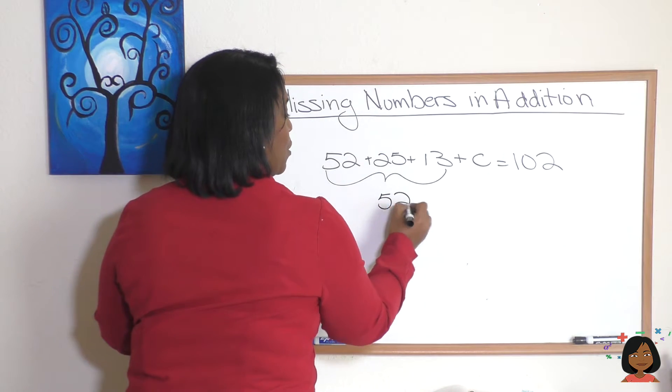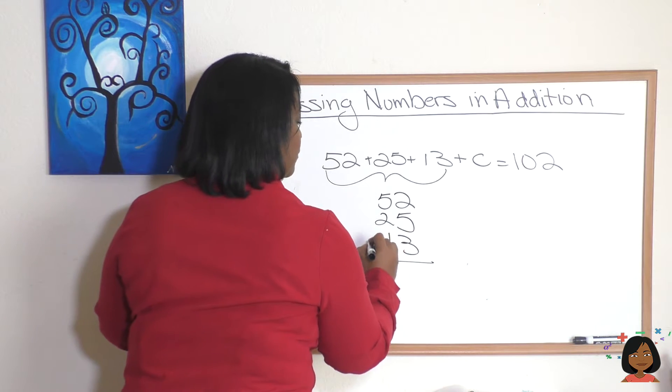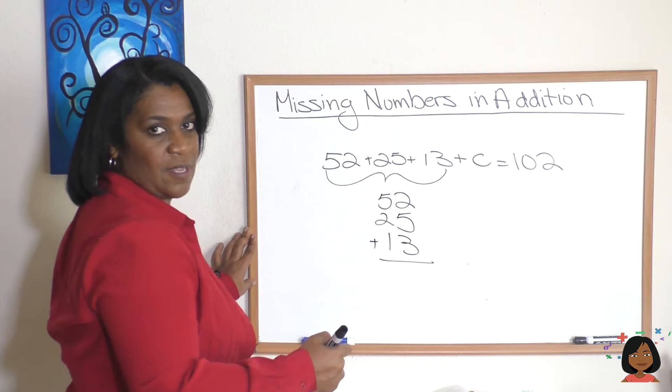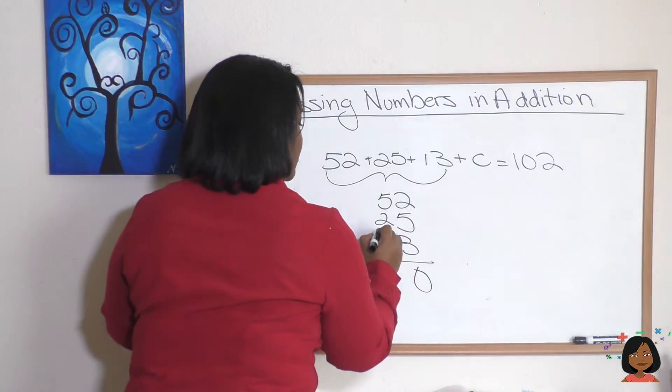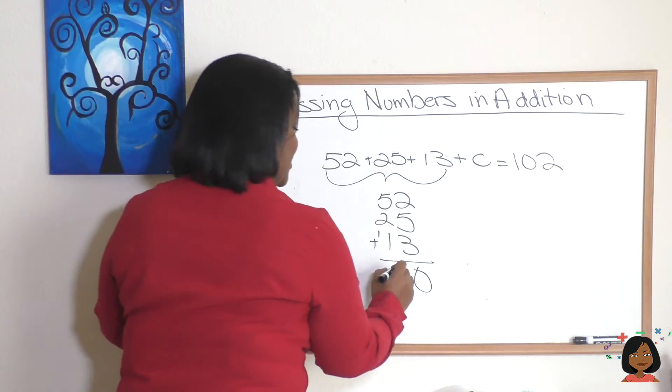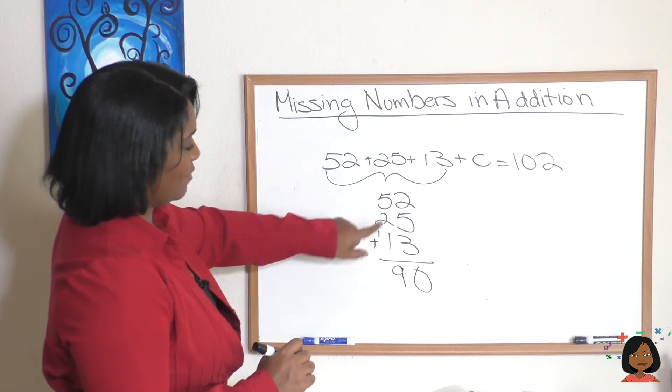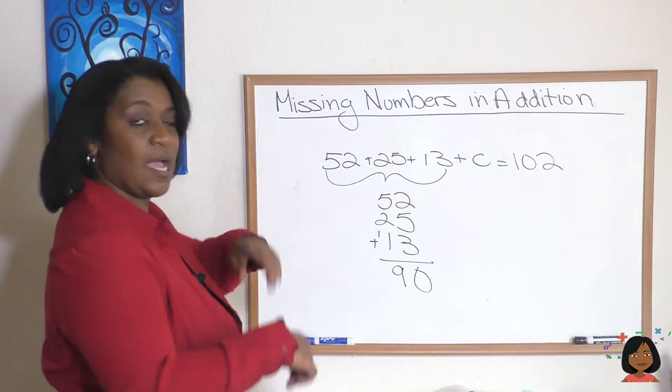We've got to add 52, 25, 13. 5 and 2 is 7. 7 and 3 is 10. 5 and 2 is 7 plus 2 more is 9. So let's just double check. 5, 2, 7 and 3 is 10. 5, 7, 8, 9. Just wanted to make sure.